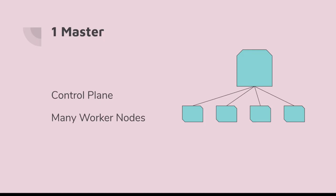A Kubernetes cluster is comprised of a master node and also many worker nodes based on your need. You can also have multiple master nodes along with multiple worker nodes. The master node is otherwise called the control plane, because this is from where the cluster is controlled. This diagram is very simple — there is a master node and a bunch of worker nodes connected to it, and this is exactly what we are going to set up now.